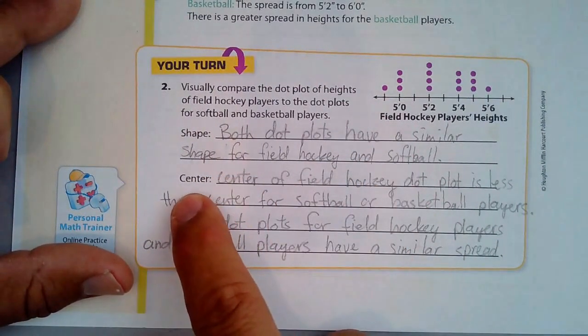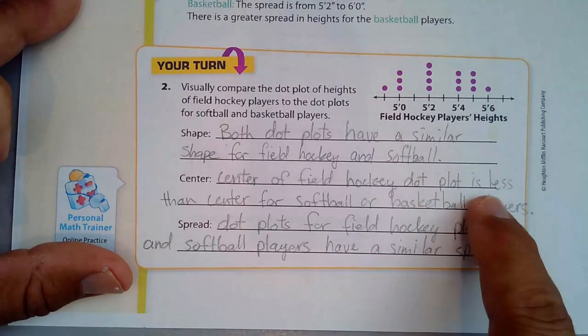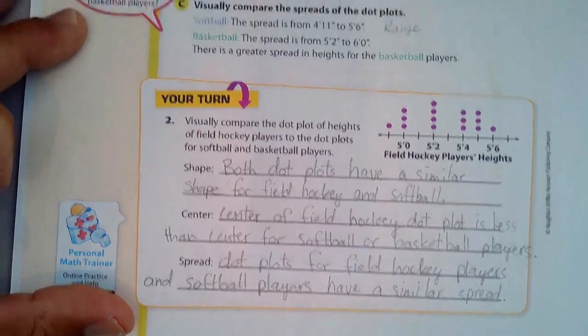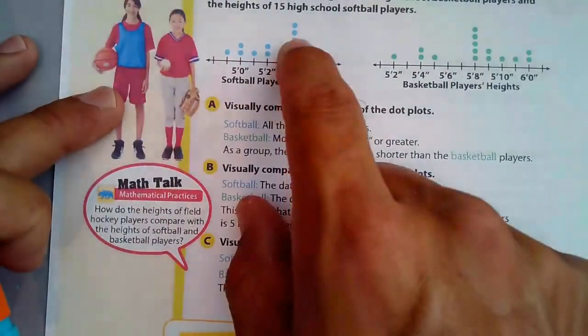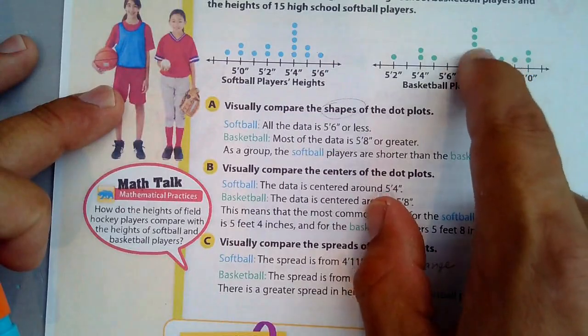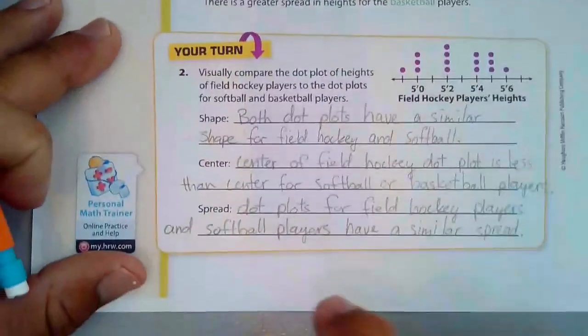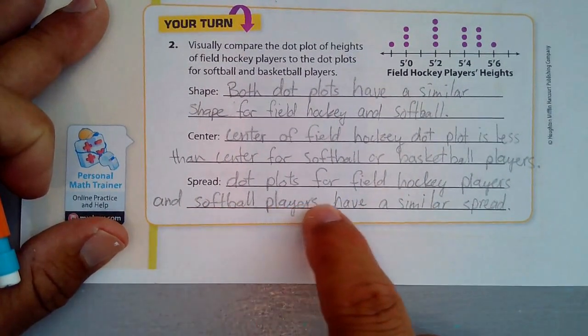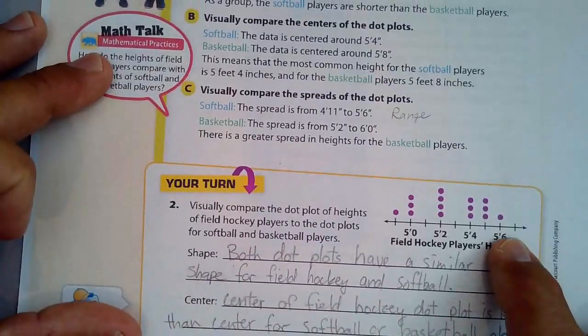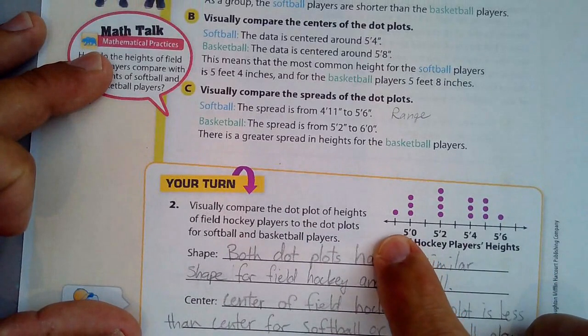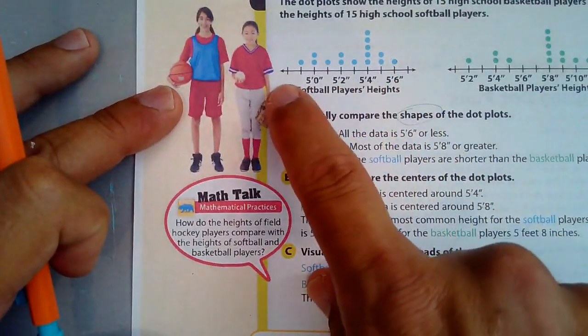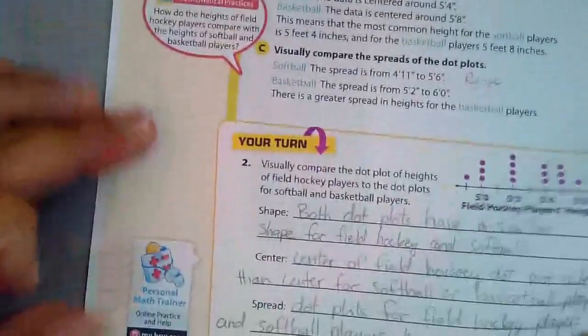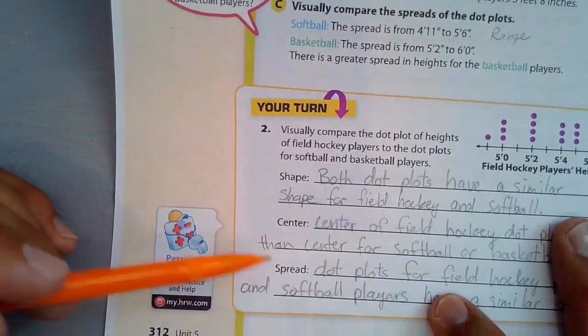The centers. Center of field hockey dot plot is less than the center for softball or basketball players. The center looks like it's 5'2 right here, and this is 5'4 and 5'8. Now, the spread. Spread dot plots for field hockey players and softball players have a similar spread. We're talking 5'6 to just under 5 foot, and this is also 5'6 to just under 5 foot. So that's the comparison of shape, center, and spread.